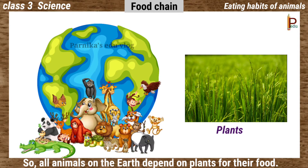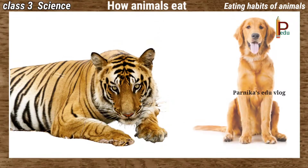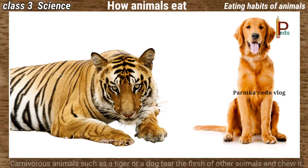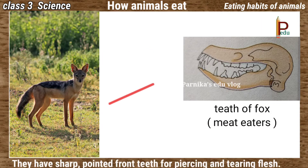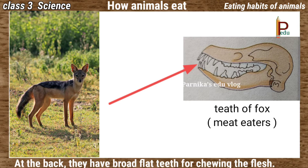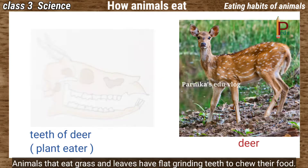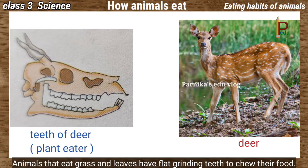Let's see how animals eat. Carnivorous animals such as a tiger or a dog tear the flesh of other animals and chew it. They have sharp pointed front teeth for piercing and tearing flesh, and at the back they have broad flat teeth for chewing the flesh.